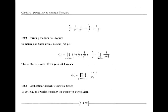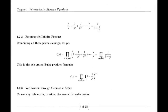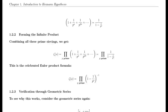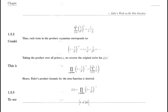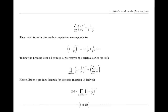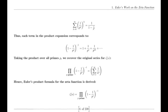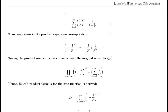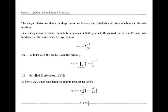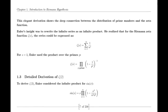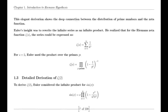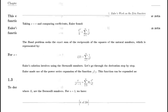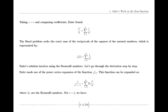Jacobi Theta Function. Riemann also made use of the Jacobi theta function, which has significant applications in various areas of mathematics. The theta function's series representation and modular properties were instrumental in Riemann's derivation of the functional equation for the zeta function. This equation is crucial for understanding the zeta function's behavior across the complex plane and highlights its intricate connections to other mathematical functions.